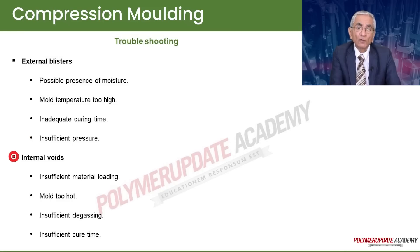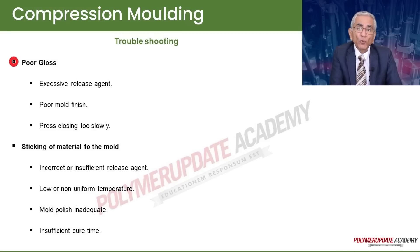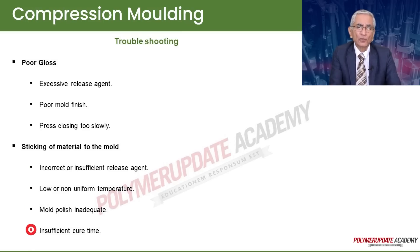Internal voids may result from insufficient material loading, the mold being too hot, insufficient degassing, or insufficient cure time. Poor gloss can be caused by excessive release agent, poor mold finish, or the press closing too slowly. Sticking of material to the mold can be due to incorrect or insufficient release agent, low or non-uniform temperature, inadequate mold polish, or insufficient cure time.